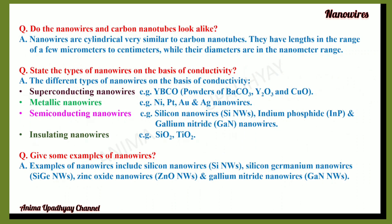Do nanowires and carbon nanotubes look alike? Nanowires are cylindrical, very similar to carbon nanotubes. They have lengths in the range of a few micrometers to centimeters, while their diameters are in the nanometer range. On the basis of conductivity, nanowires can be classified as superconducting nanowires, metallic nanowires, semiconducting nanowires, and insulating nanowires.